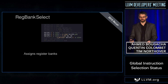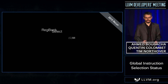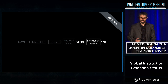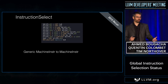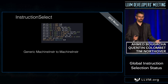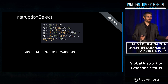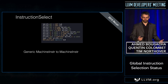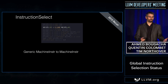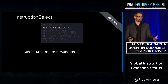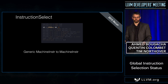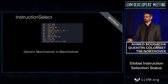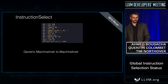That was the RegBankSelect pass. Now let's move to the last stage of GlobalISel, instruction select. At this point we have all legal instructions with register banks assigned. What's left to do is remove the generic opcodes and use actual target-specific opcodes. For example, a load of a byte on a GPR register bank on AArch64 becomes the LDRB instruction. You do the same thing for all instructions and you're done.